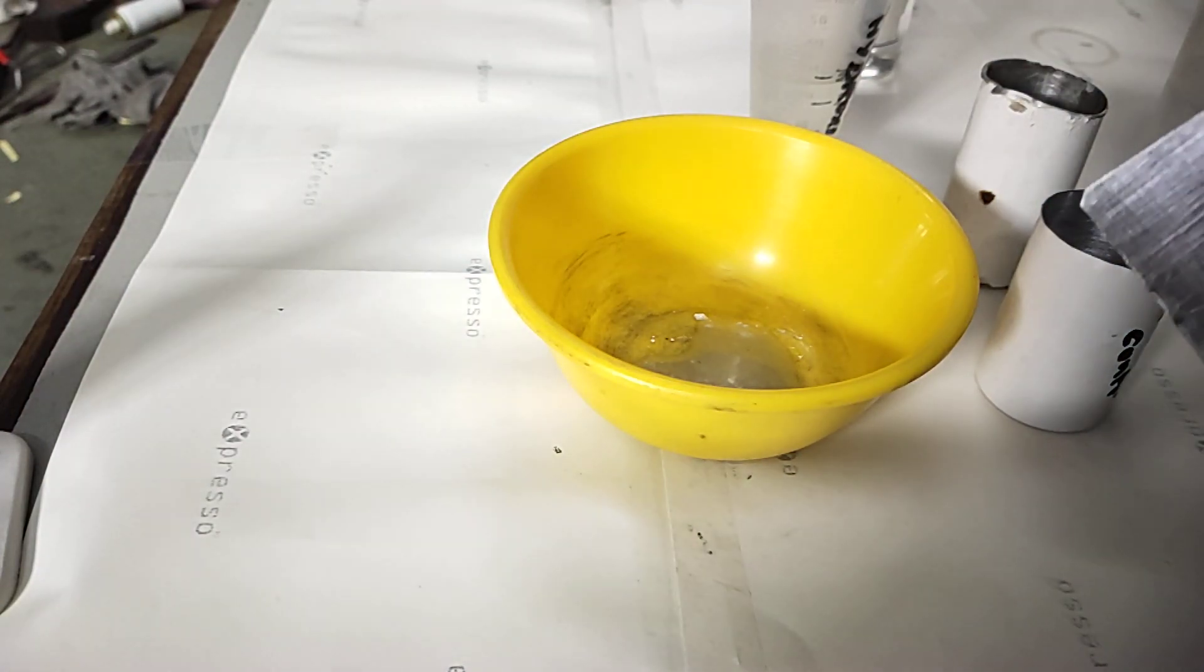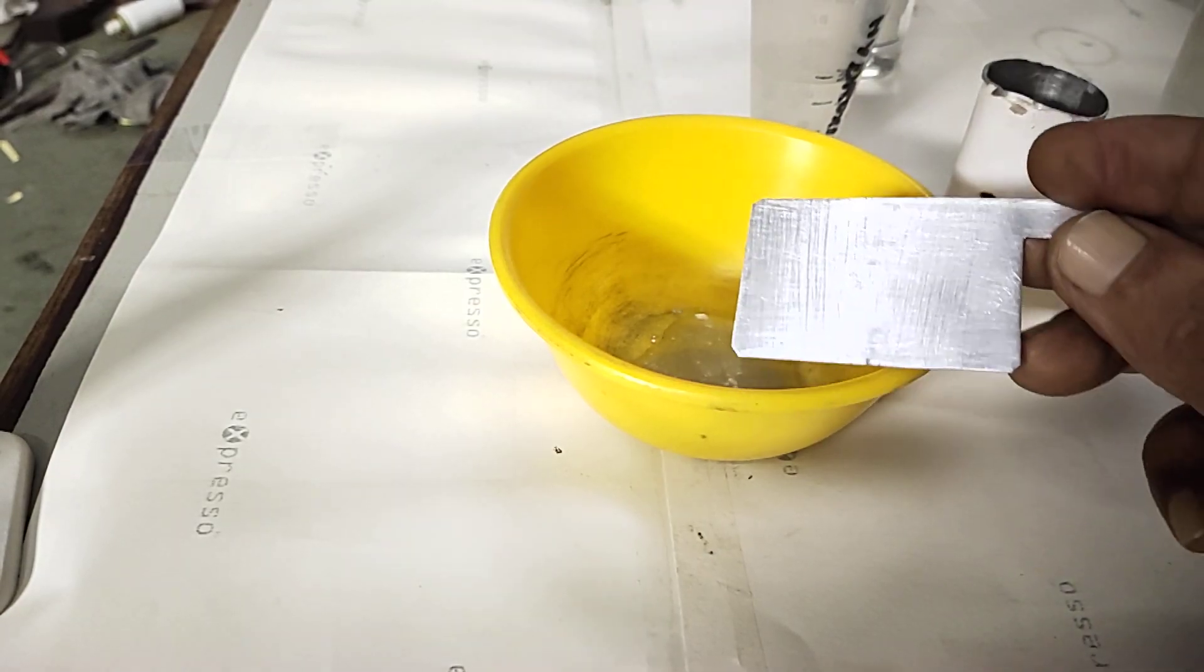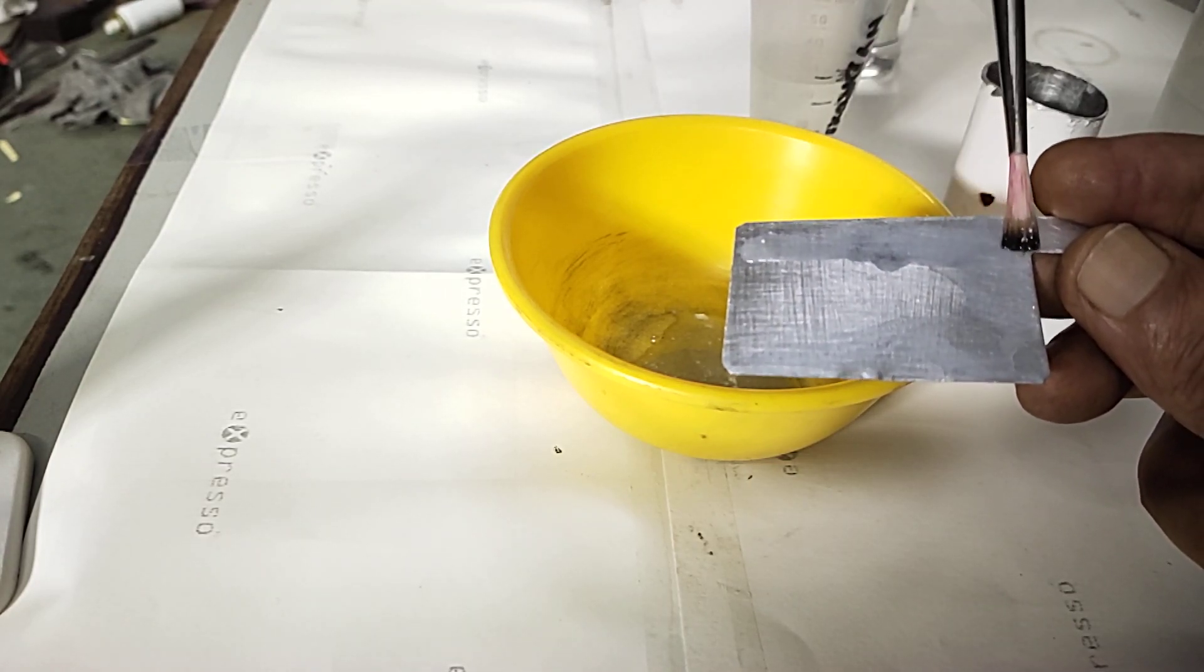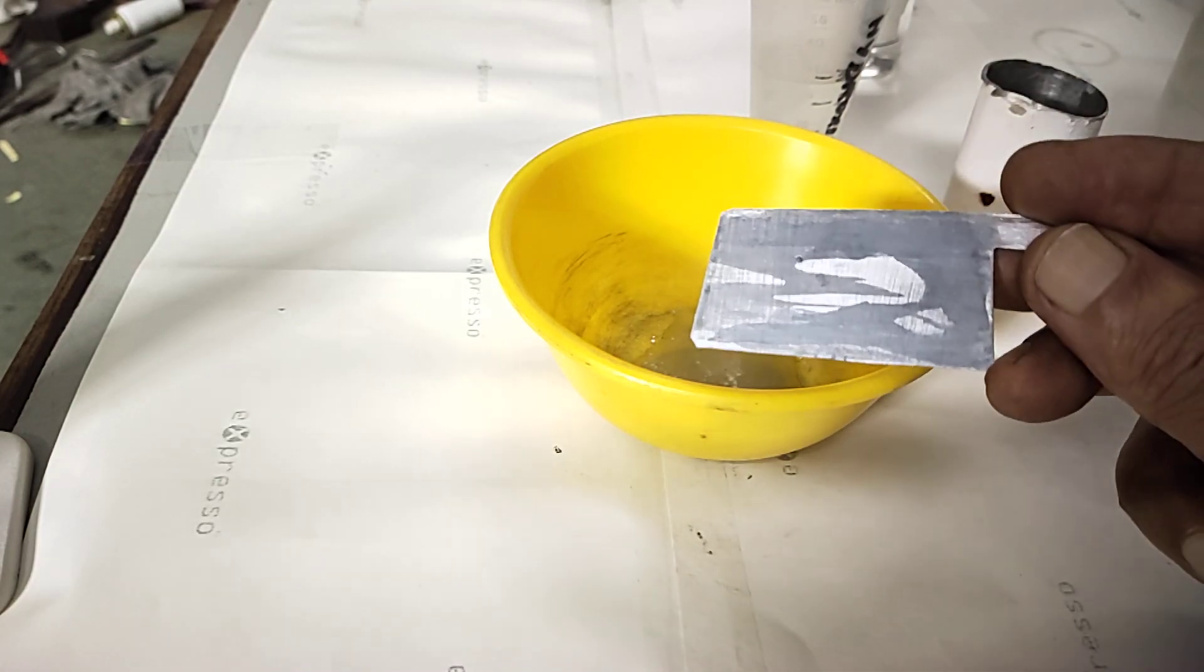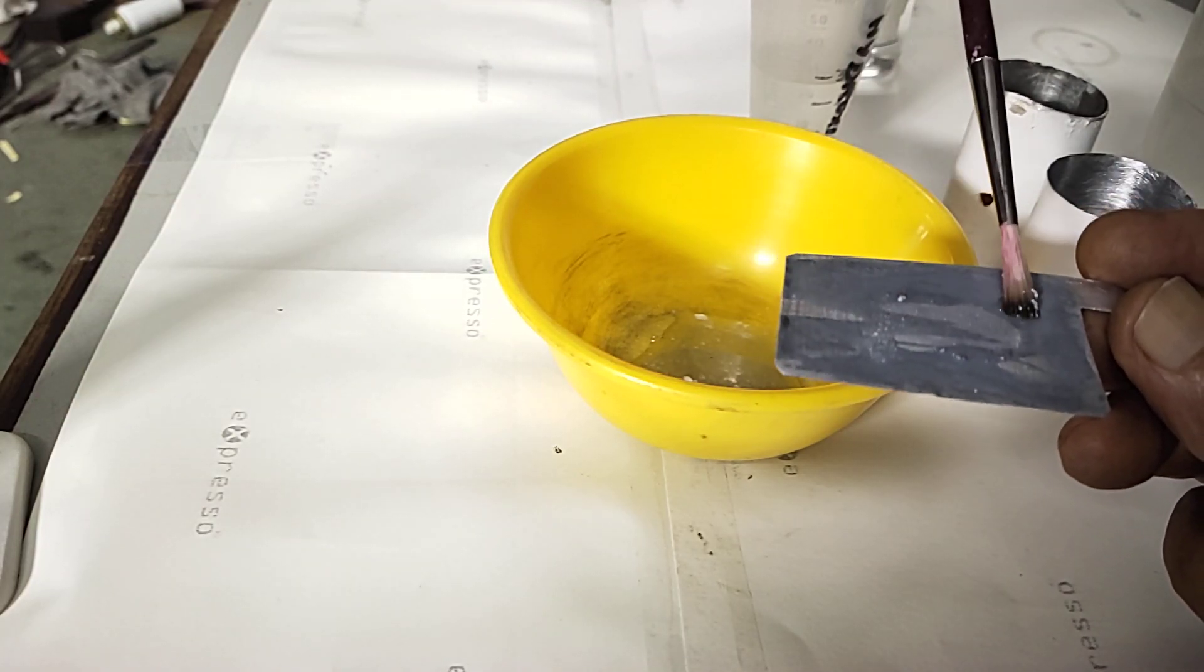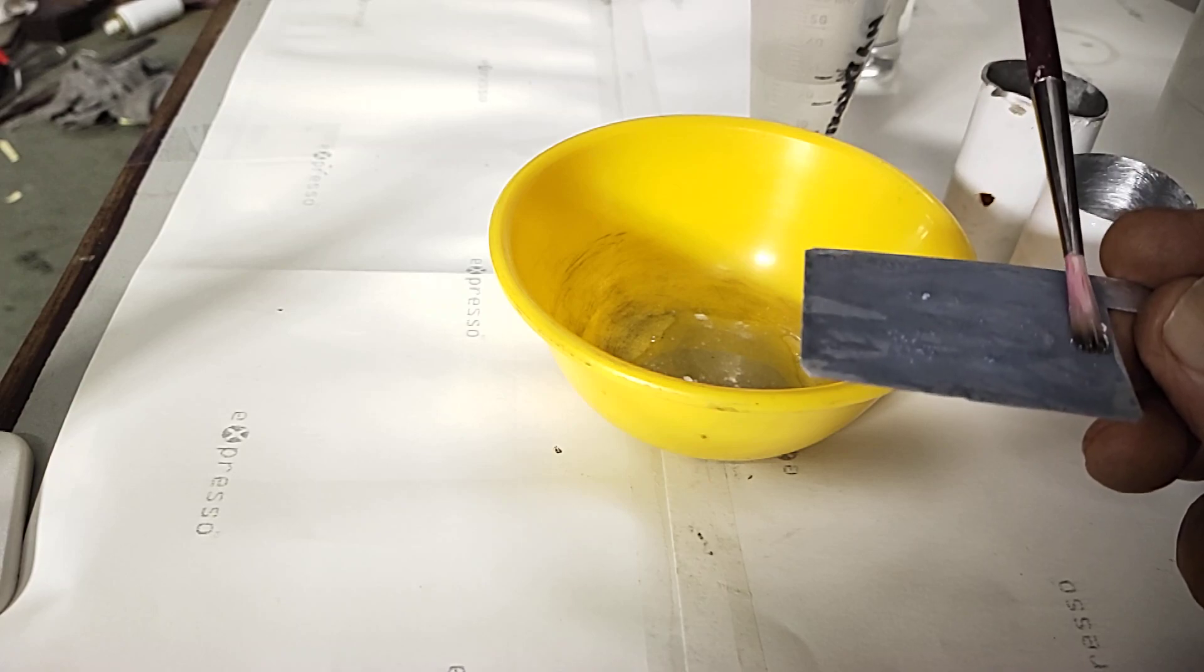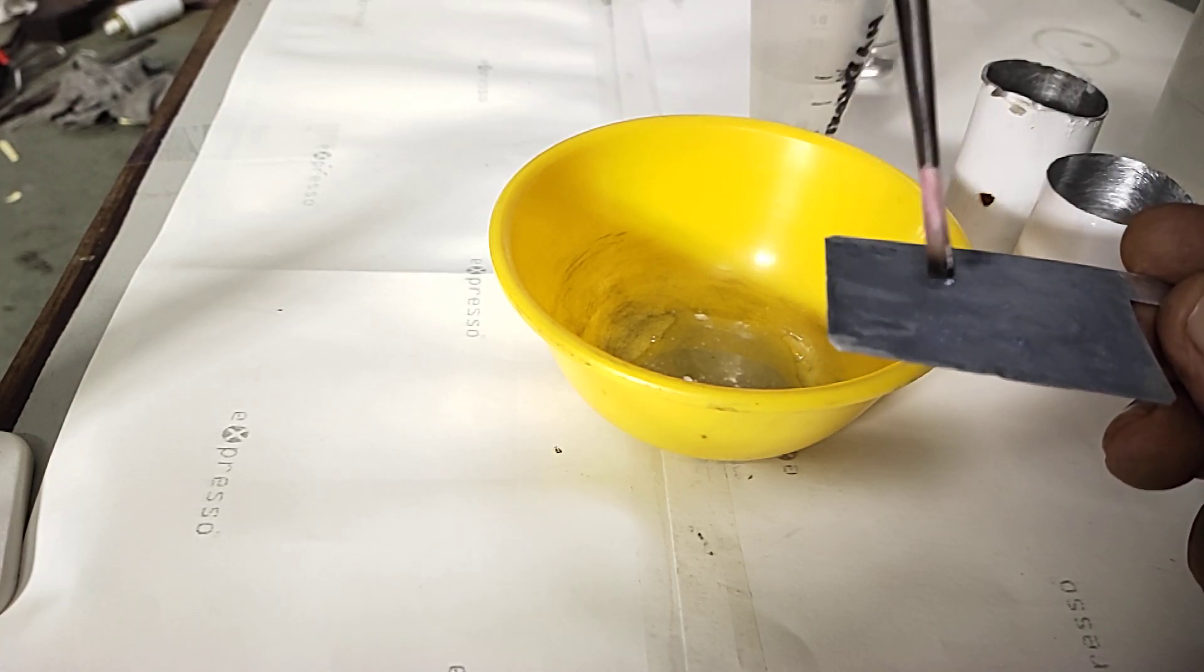I will show you how to coat on this aluminum sheet first. Can you see? It is turning grey in color. It was more shining white, now it is turning grey in color.